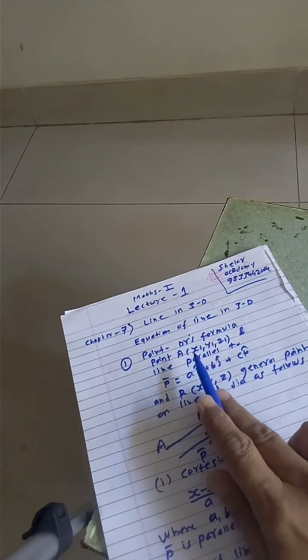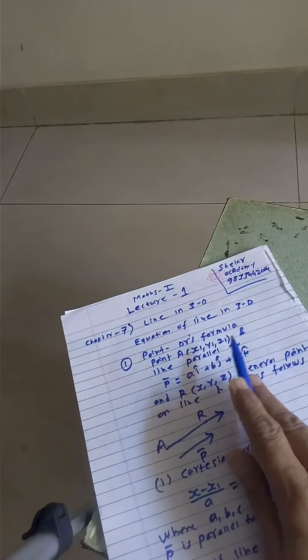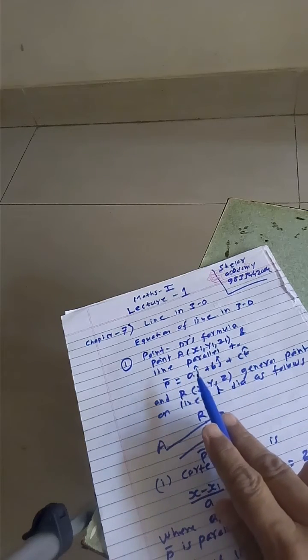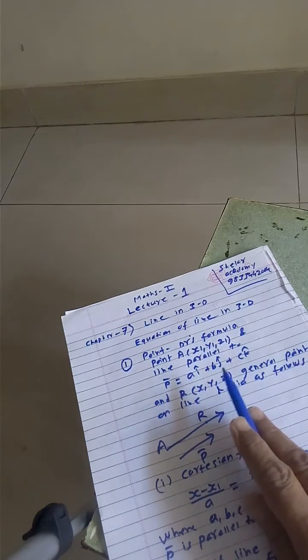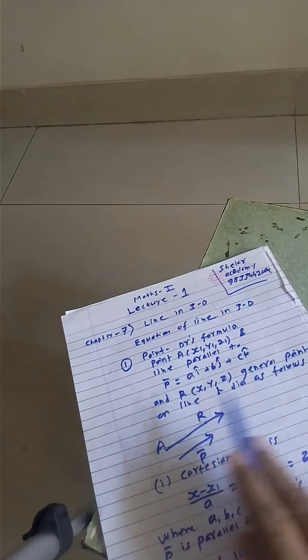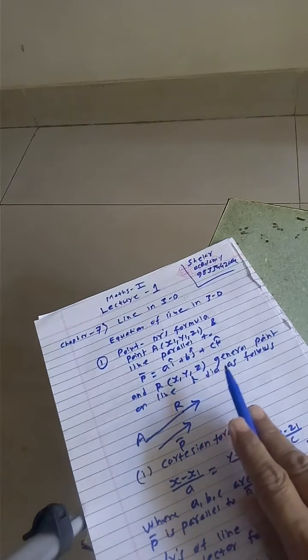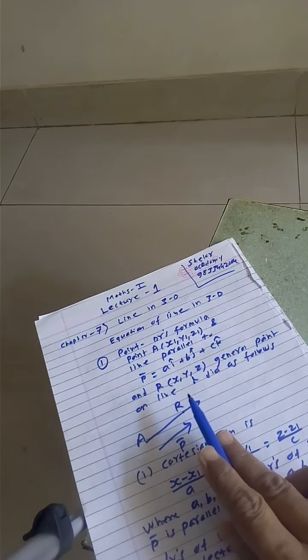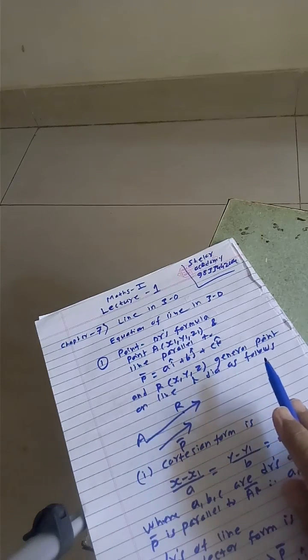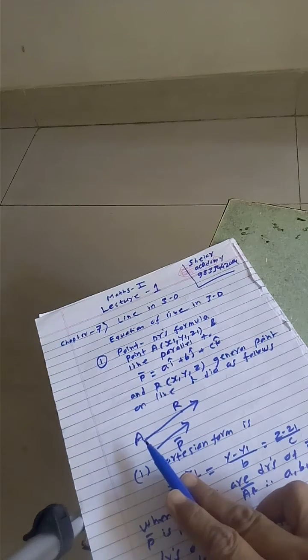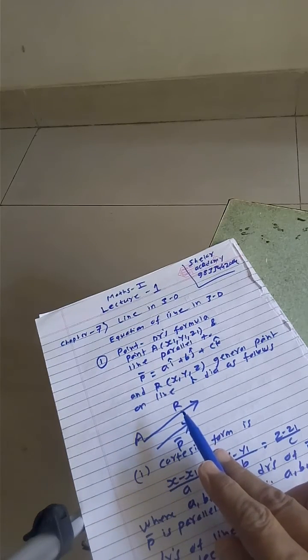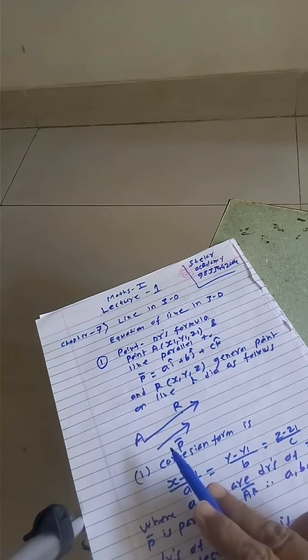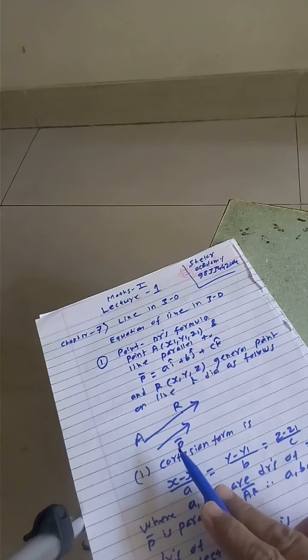Point will be given A (X1, Y1, Z1) and line parallel to P bar, it is A i cap plus B j cap plus C k cap and capital R (X, Y, Z) is general point on the line as shown below. Now diagram is such that A is a given point, R is the general point, AR is a vector and parallel to P vector.